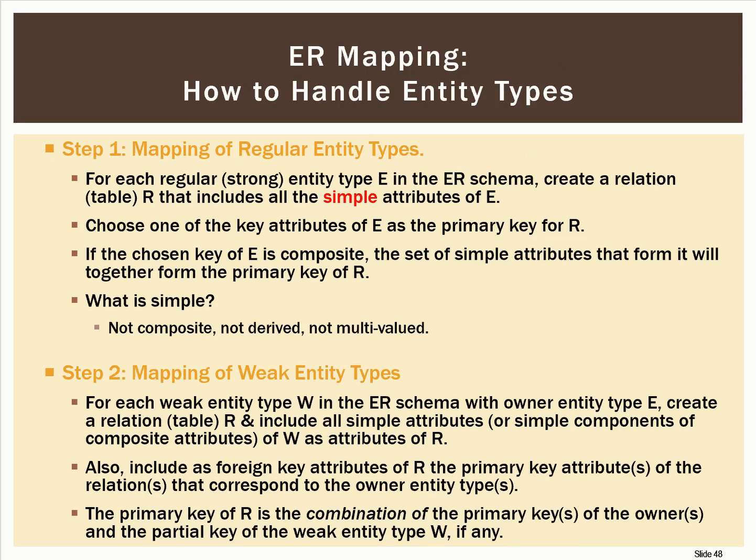On to step one: mapping regular entity types. It should not surprise you that every entity type becomes a table in your physical database. For every regular entity type, we want to make a table that includes all of the simple attributes of that entity type. If you had an attribute that was underlined, that meant it was a primary key candidate, and you can pick one of those to act as the primary key for your table. If there were no attributes that were underlined — no primary key candidates — then you as the database designer would have to add an additional attribute in the physical model that might not have been present in your ER diagram.